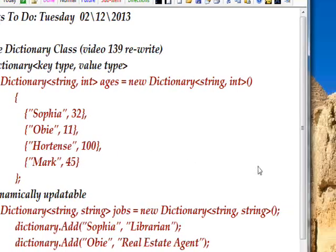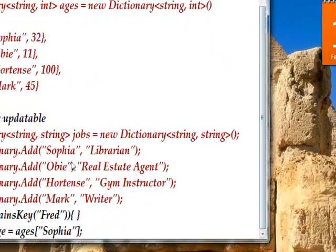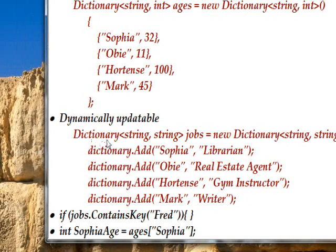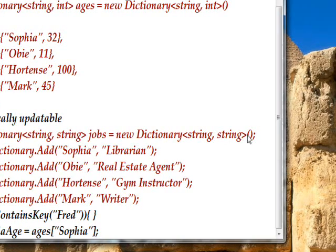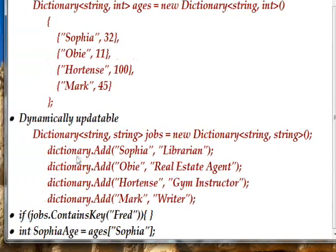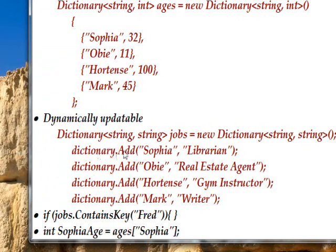One of the good things about dictionaries is they're dynamically updatable, just like a list. So we could define a `Dictionary<string, string>` named `jobs`, instantiated with `new Dictionary<string, string>()` — a call to the constructor — and then use `dictionary.Add` to add items at any time in the code. For example, `dictionary.Add("Sophia", "librarian")`, `dictionary.Add("Obi", "real estate agent")`, and so on, building up a jobs lookup.